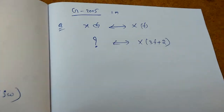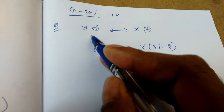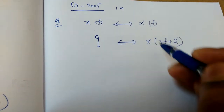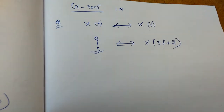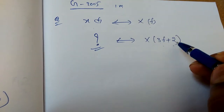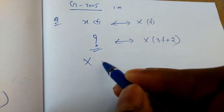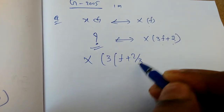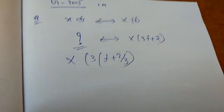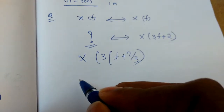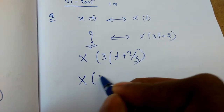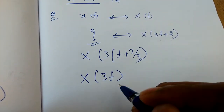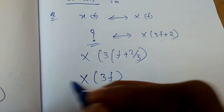One more question: given x(t) with Fourier transform X(f), if the Fourier transform is X(3f + 2), what is x(t)? Again we use scaling and shifting. Take 3 common: X(3(f + 2/3)). First take X(3f), then shift by 2/3.